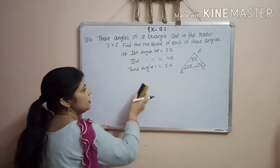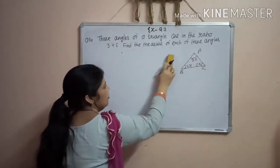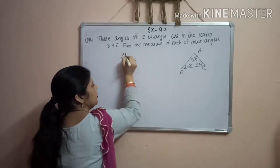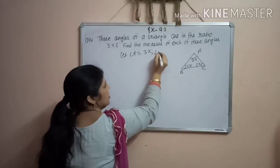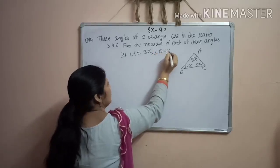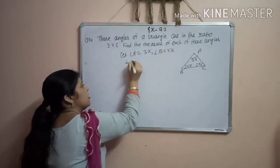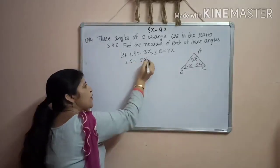Even you can use like this. So, let angle A be 3x, angle B be 4x and angle C be 5x.